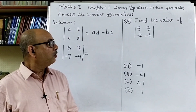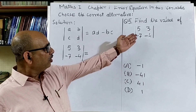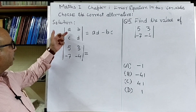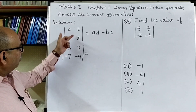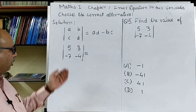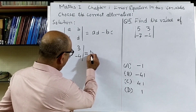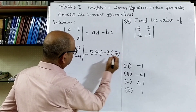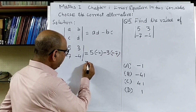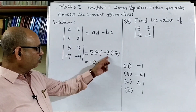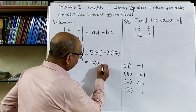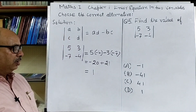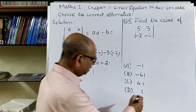Question number five: find the value of the determinant with elements 5, 3, minus 7, minus 4. The value of the determinant a b c d is a into d minus b into c. So the value is 5 into minus 4, minus 3 into minus 7. That is minus 20 plus 21, which equals 1. The correct option is D.